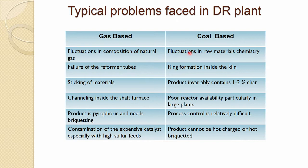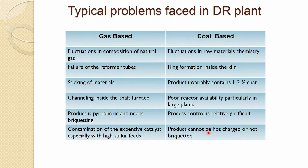In coal-based processes, there is fluctuation in raw material chemistry. Though a wide variety of compositions is accepted, one still has to be careful about raw material chemistry. Ring formation is related more to kiln-based DR processes. The product invariably contains around 1 to 2 percent char, poor reactor availability particularly in large plants, relatively difficult process control, and the product cannot be hot charged or hot briquetted — unlike gas-based plants.